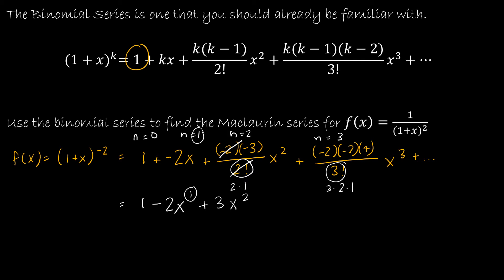And then with 3 factorial, 3 and 2 cancel. That should have been a negative 4 — I'm left with minus 4x cubed, and then that pattern is going to continue.